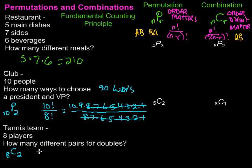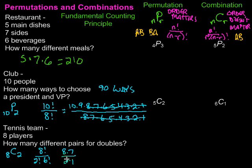Using the combination formula: 8 factorial over 2 factorial times 6 factorial. The 6 factorial cancels out from top and bottom, leaving 8 times 7 on top and 2 factorial — which is 2 times 1, or just 2 — on the bottom. Simplifying: 8 divided by 2 gives 4, times 7 gives 28. So there are 28 different pairs that could be made from this tennis team for doubles.